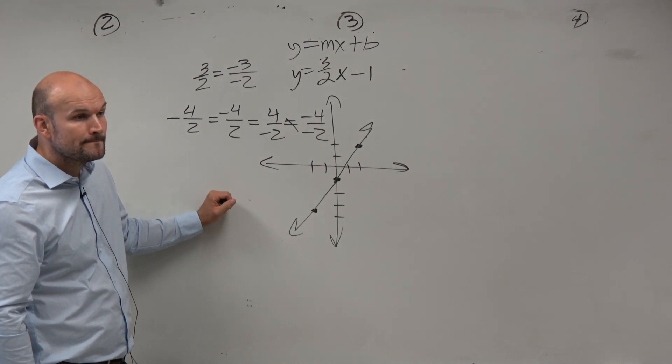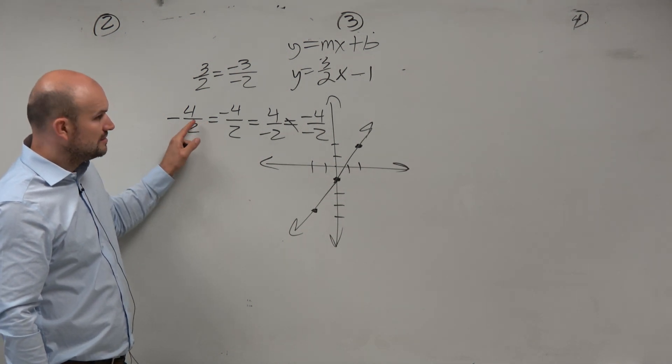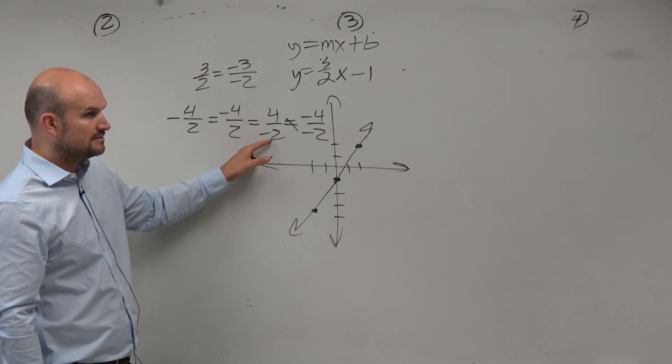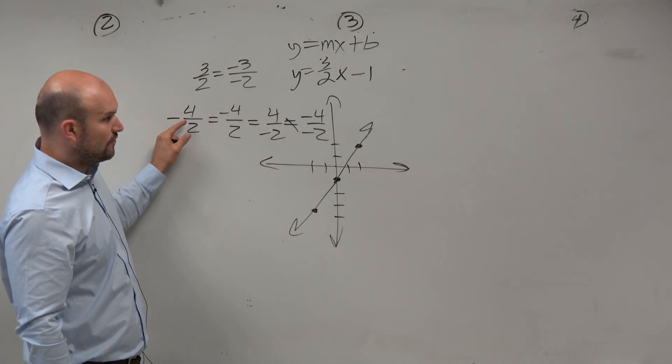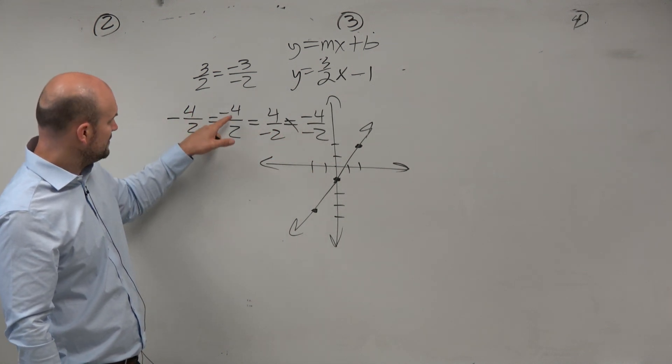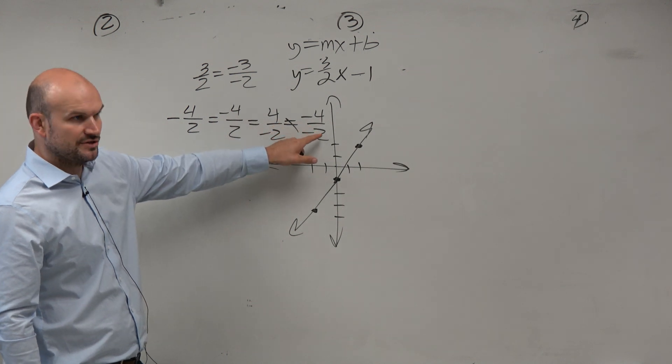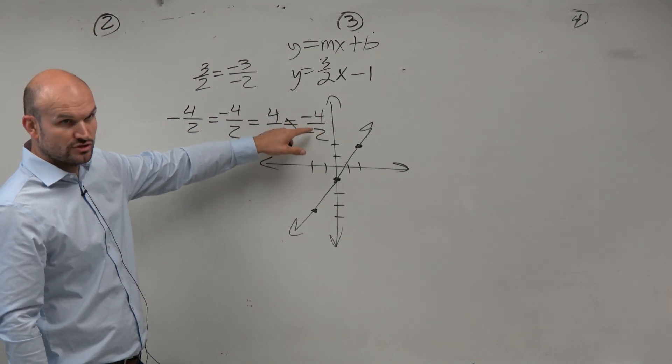Yeah. So what that means is down and to the right is the same thing as up and to the left. But don't try to make a negative 4 halves negative 4 over negative 2, because that's equal to positive 2. Right? So don't do that.